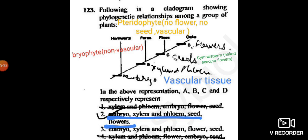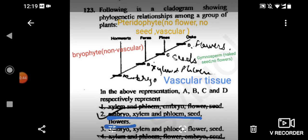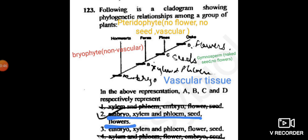In the above representation, A, B, C, D respectively represent. You need to find out the characteristic that suits the plants. First one is given xylem and phloem, embryo, flowers, and seeds.